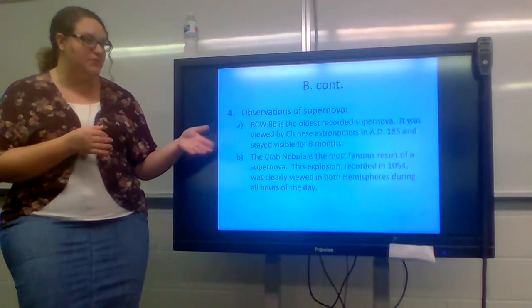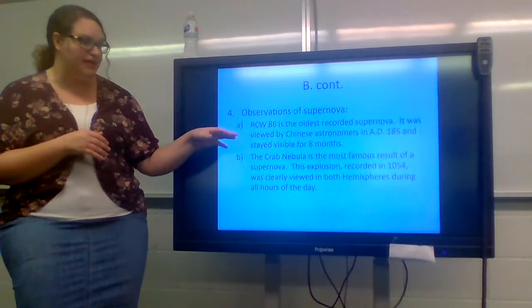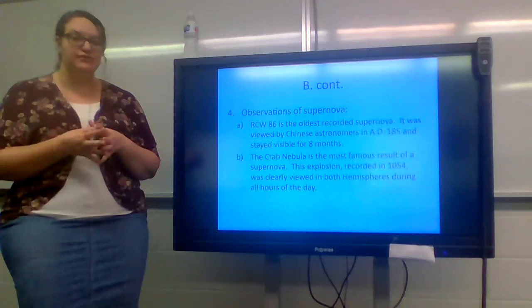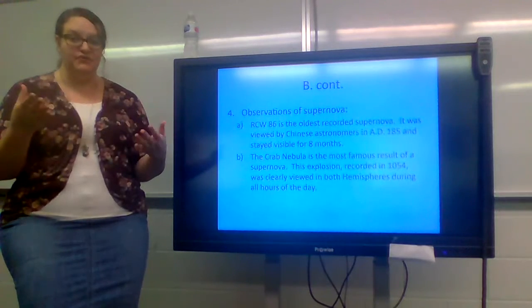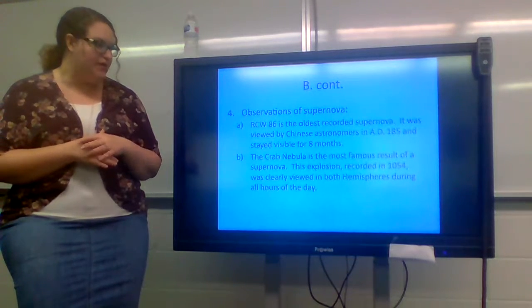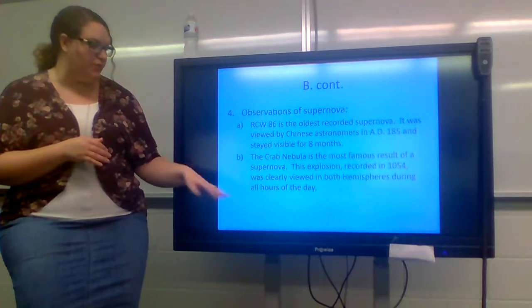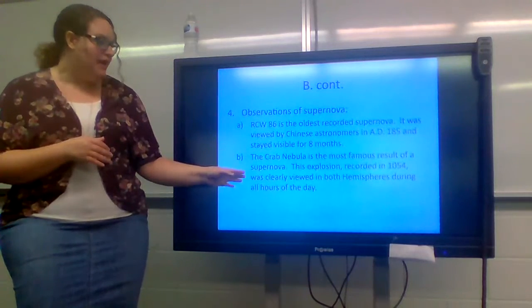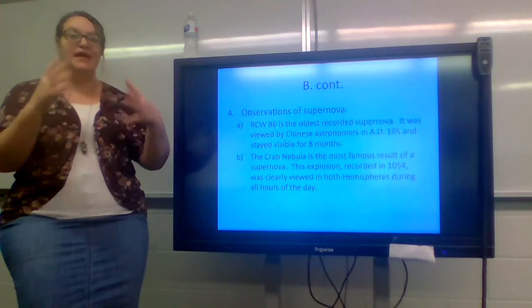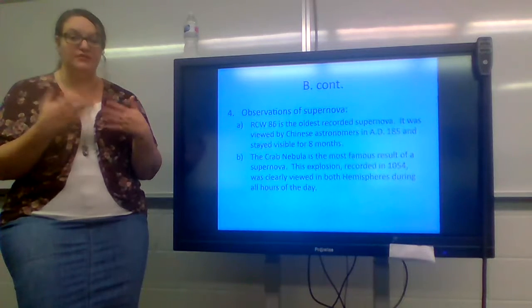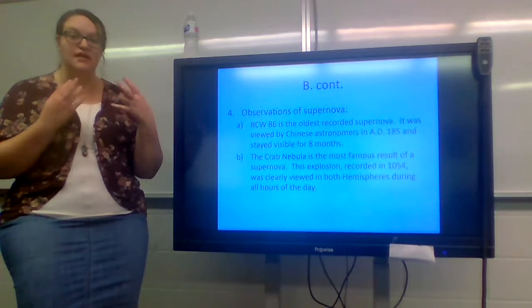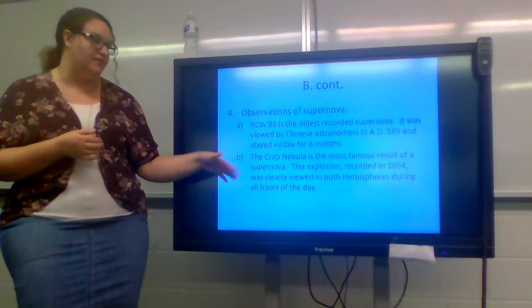You have RCW-86. It is the oldest recorded supernova. It was viewed by the Chinese in 185 AD. And it stayed visible for eight months. The Chinese took very detailed records on it. And you can go and look those up and study it if you want in your free time. And then you have the Crab Nebula. It is the most famous result of a supernova. This explosion recorded in 1054 AD. It was clearly viewed in both hemispheres during all hours of the day. It wasn't something that just had to be viewed at night. It was such a massive explosion that the energy left over from it was bright enough to be viewed during the daytime. And again, you can go back and you can look that up and you can read the detailed accounts of people viewing that nebula that was left over from the supernova.